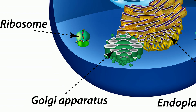The proteins of the lysosomes are created at the rough ER and packed in a vesicle that is transported to the Golgi apparatus. The Golgi apparatus uses these proteins to make digestive enzymes and creates a vesicle that pinches off. This vesicle is a lysosome.